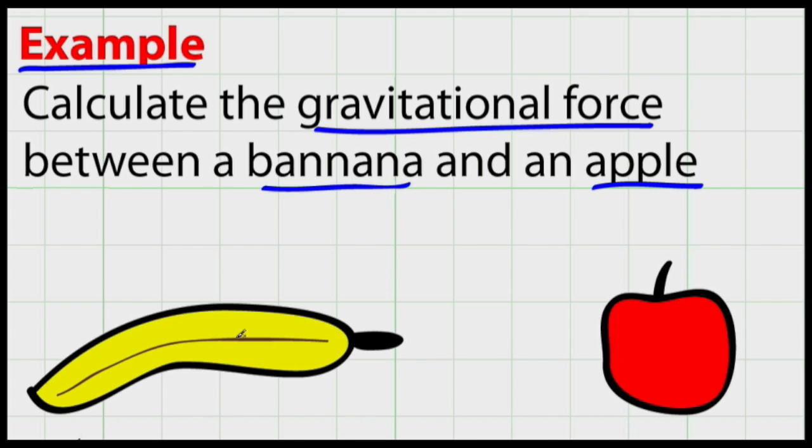According to Newton's law of universal gravitation, there's a force acting on the banana from the apple, force like that. And similarly, there's a force of the banana pulling on the apple that's equal in magnitude, opposite in direction, and collinear.